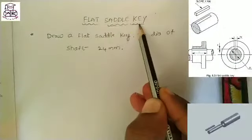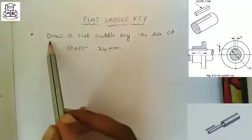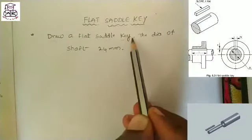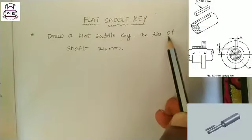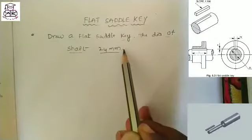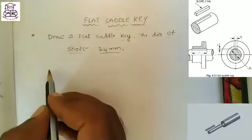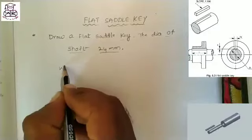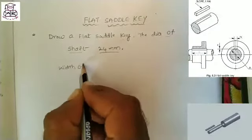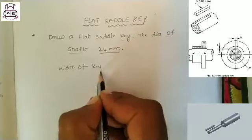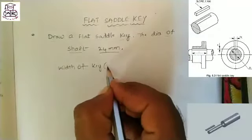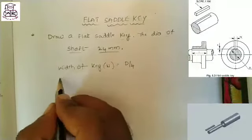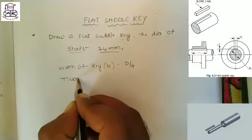Flat saddle key. This is the question of flat saddle key. Draw a flat saddle key, the diameter of shaft 24 mm. The keys are completely dependent on the size of the shaft. Width of key equal to D by 4, where D is the diameter of the shaft.